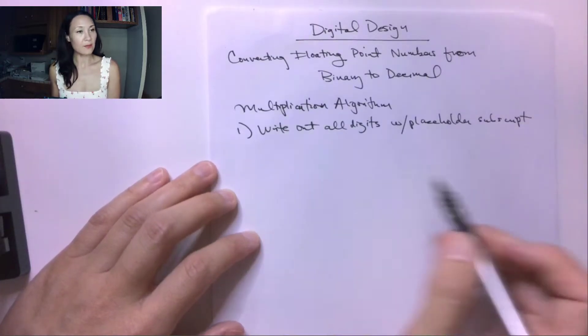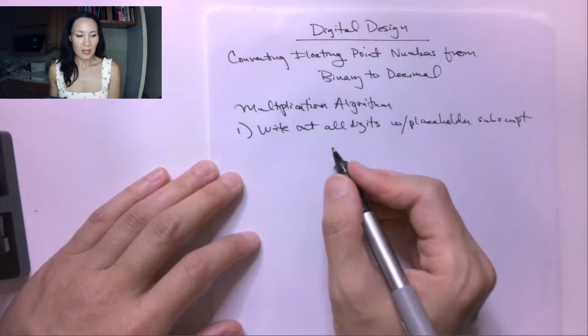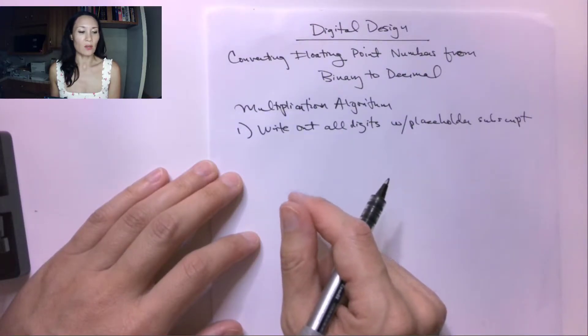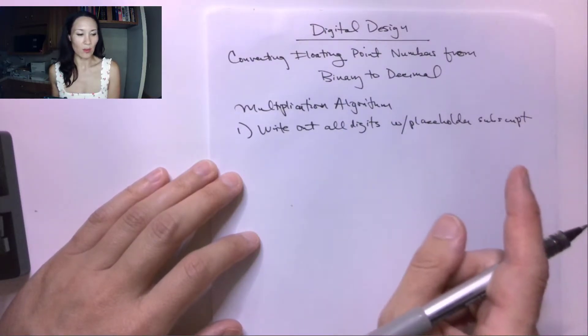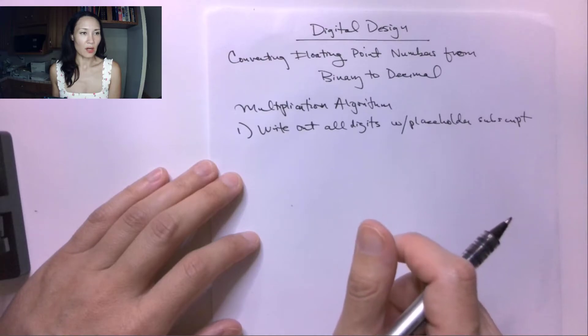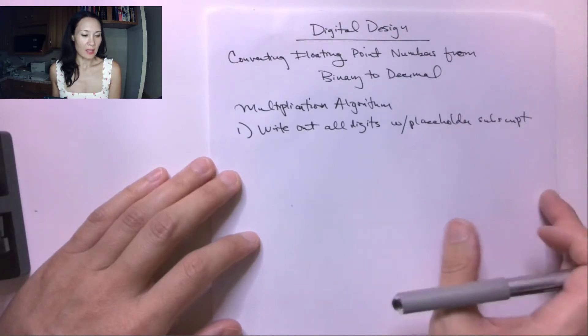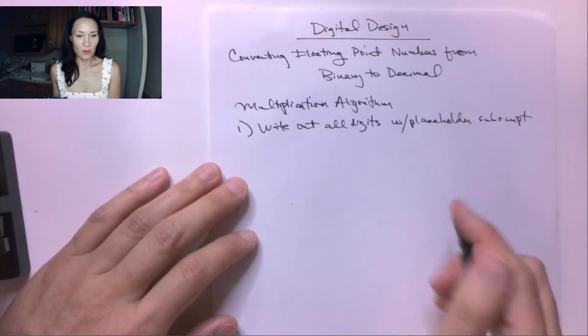What's different than what we did before is as the subscripts go to the right of the decimal point, the placeholders start at negative 1, and they decrease as you move to the right.